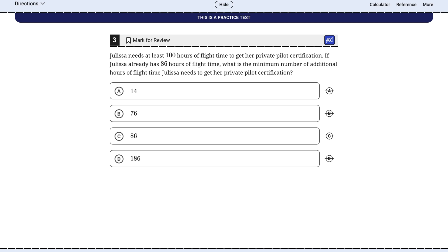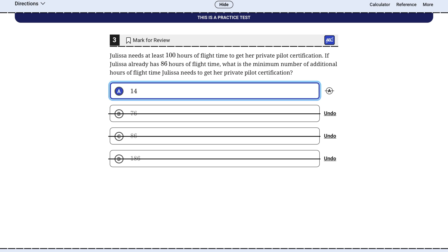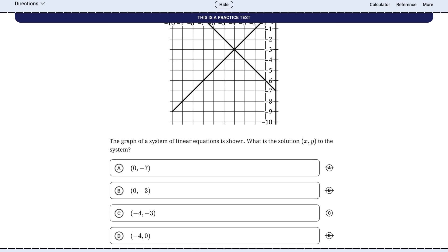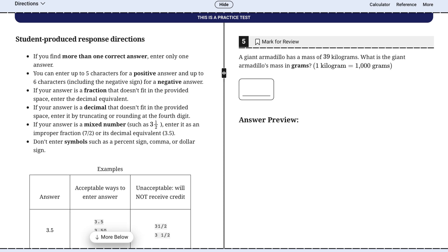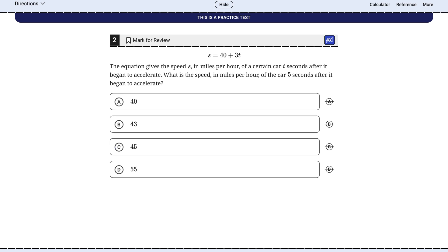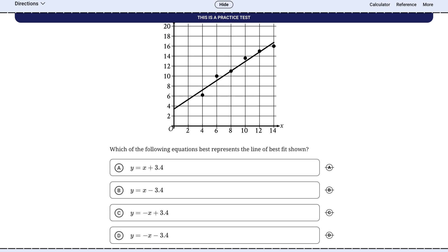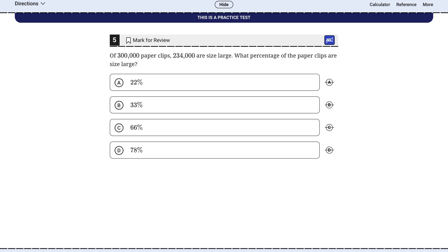Finally, let's talk about the psychological trap of the too easy question. Especially at the beginning of a module, you will get some questions that seem incredibly simple. Your brain, wired to expect tricks, might start to overthink. Can it really be that easy? What am I missing? Stop. Sometimes a question is easy because it's an easy question. The SAT needs to have a range of difficulties. Trust your knowledge. If the answer seems straightforward, it probably is. Answer it confidently and move on. Wasting two minutes doubting yourself on an easy question is just as bad as spending two minutes stuck on a hard one.